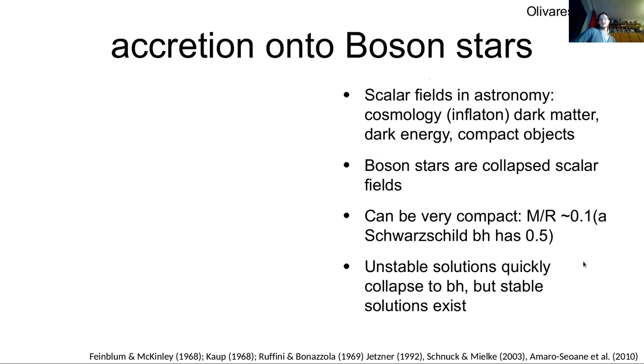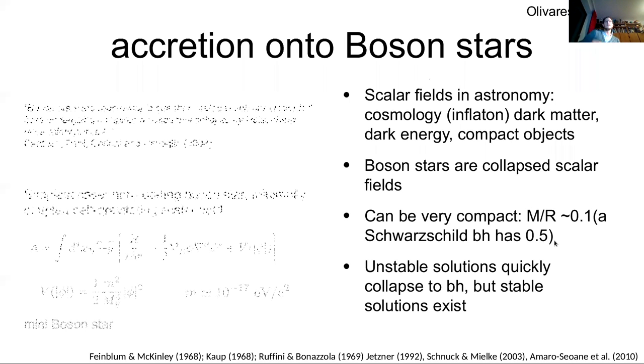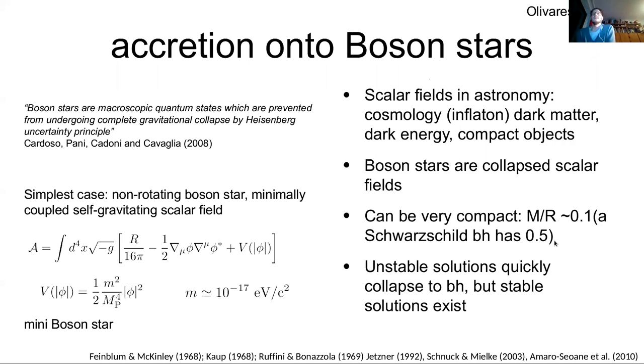And when you do that, you can form something that's called a boson star. So it's a collapsed scalar field. Another example for a scalar field is the Higgs field. So there could be more scalar fields in nature. We don't know yet. So what happens if you have a collapsed scalar field? They can be very compact. The ones we're showing here have this compactness that I introduced in the very beginning. M over R is 0.1. And for Schwarzschild black hole, you have 0.5. So it's still pretty compact.